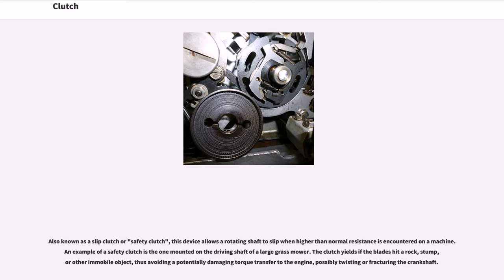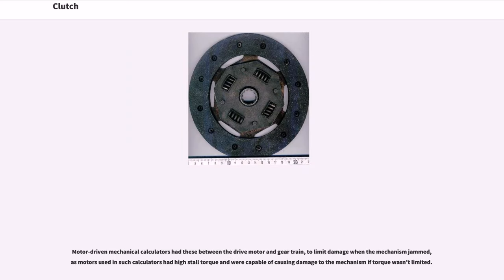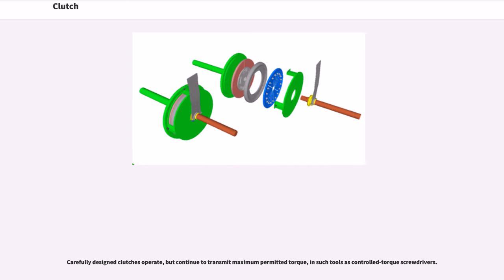Also known as a slip clutch or safety clutch, this device allows a rotating shaft to slip when higher than normal resistance is encountered on a machine. An example is the safety clutch mounted on the driving shaft of a large grass mower — the clutch yields if the blades hit a rock, stump, or other immobile object, thus avoiding a potentially damaging torque transfer to the engine, possibly twisting or fracturing the crankshaft. Motor-driven mechanical calculators had these between the drive motor and gear train to limit damage when the mechanism jammed. Carefully designed clutches can also continue to transmit maximum permitted torque, as in controlled torque screwdrivers.